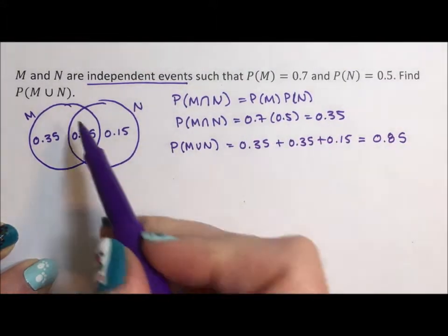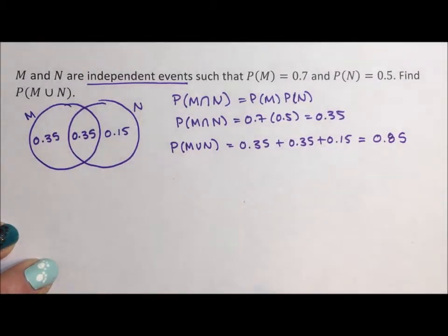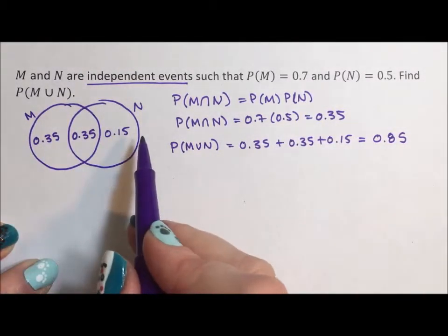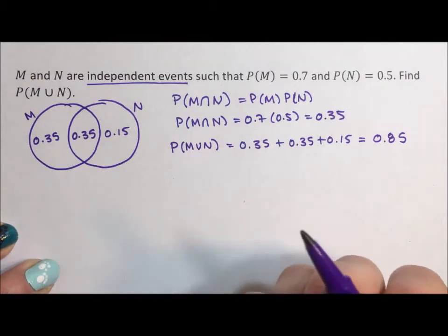Now there are shortcut ways. We could have just done the 0.7 plus 0.15, but some people don't want to get to the visual. Some people just want to use the formula.